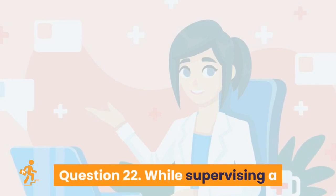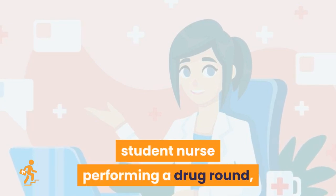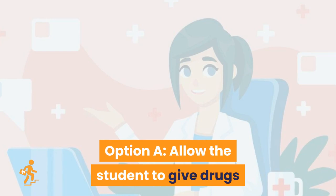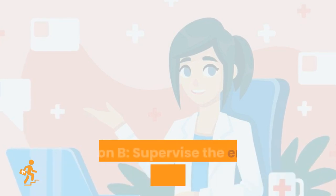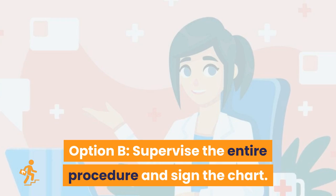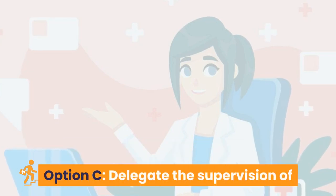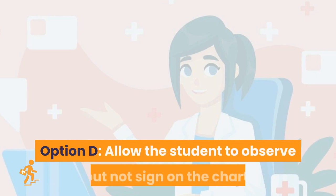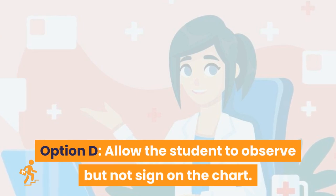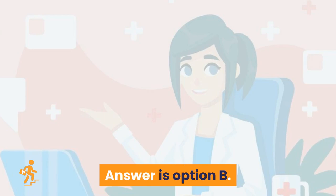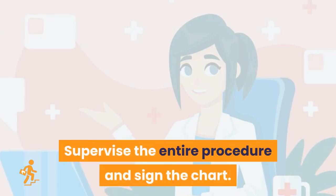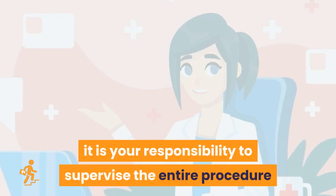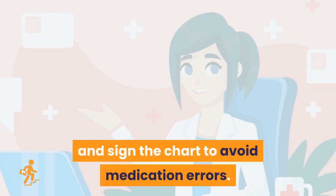Question 22. While supervising a student nurse performing a drug round, what would the NMC expect you to do at all times? Option A: Allow the student to give drugs and sign the chart at the end of shift. Option B: Supervise the entire procedure and sign the chart. Option C: Delegate the supervision of the student to a senior nursing assistant and ask for feedback. Option D: Allow the student to observe but not sign on the chart. Answer is Option B: Supervise the entire procedure and sign the chart, to avoid medication errors.